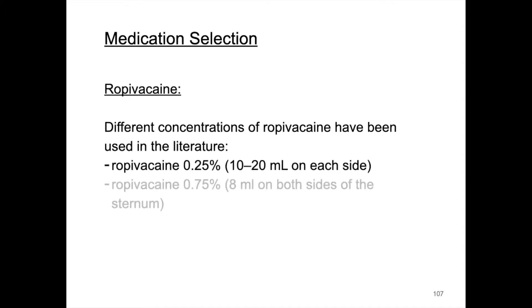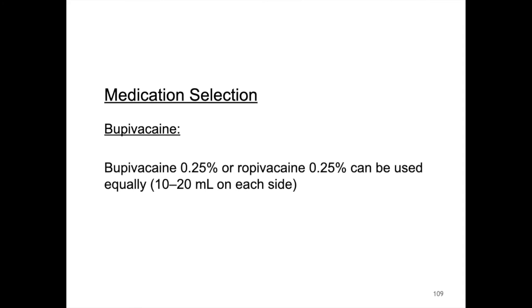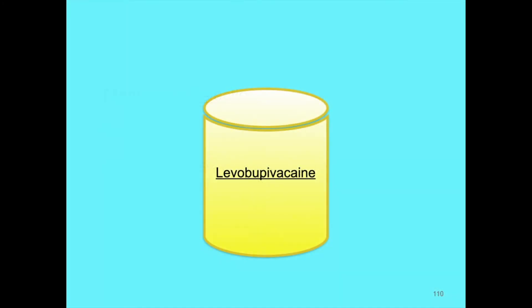Type, concentration, and dosage of local anesthetics have not been standardized. Therefore, further studies are needed to provide more data regarding the optimal injectate. Different concentrations of Ropivacaine have been used in the literature: Ropivacaine 0.25%, 0.75%, 0.3%, or 0.5%. Ropivacaine 0.25% can be used equally, 10–20 ml on each side.